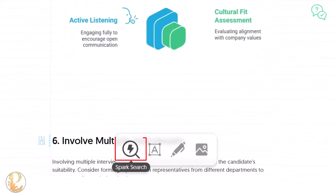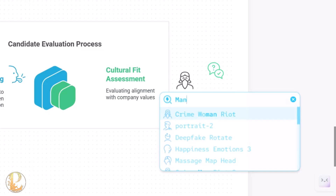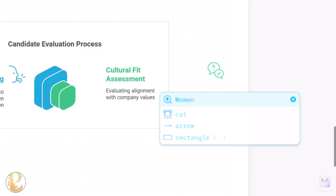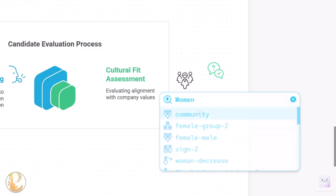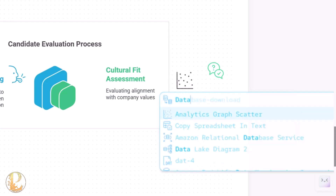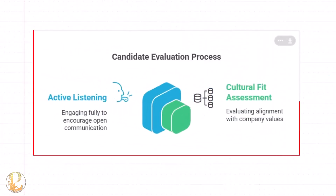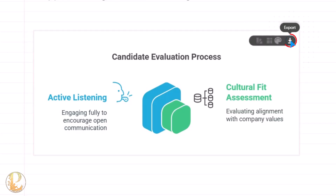To add a separate icon, there's a 'Spark Search' at the bottom. You can type a keyword — for example 'man,' 'woman,' or 'data' — and it returns a variety of matching icons. Categories like data analytics, graph, scatter, spreadsheet, and more are available. Select an icon you like and drag it into position.